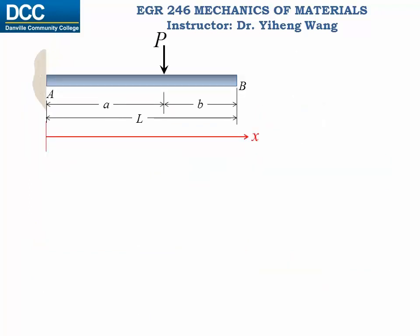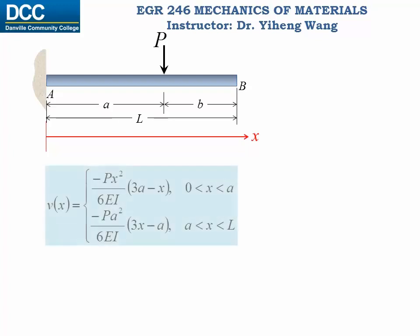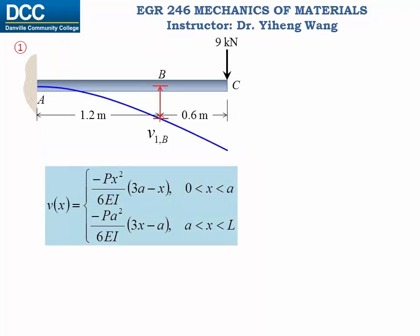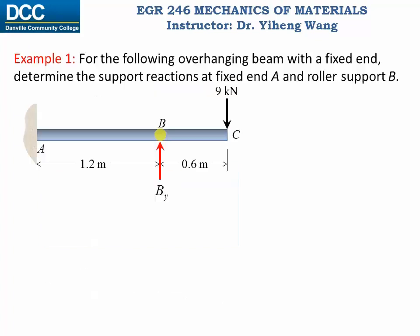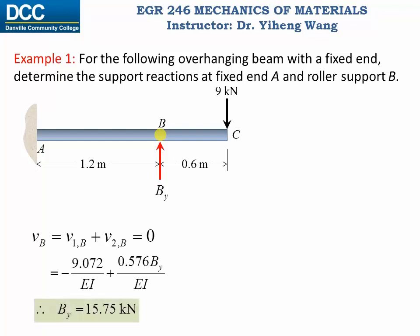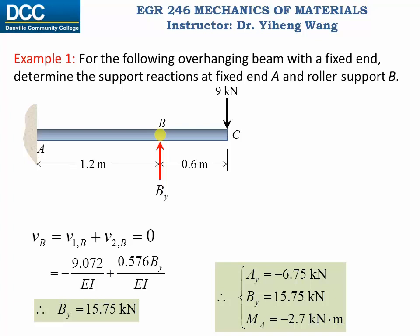For a cantilever beam subjected to only one vertical force, we can either derive its deflection function ourselves or look it up from the internet or our textbooks, and calculate the deflection at point B in the first situation and the deflection at point B in the second situation, which contains our unknown force BY. Substituting them into our compatibility condition, we can solve for BY. And once BY is solved, this member is now statically determinate, and we can solve for the support reactions at point A using equilibrium alone. These results are the same as the ones we got in the previous video using the method of integration.